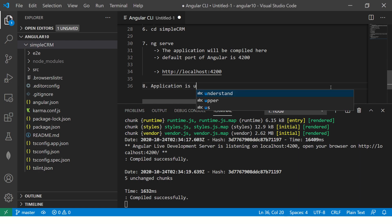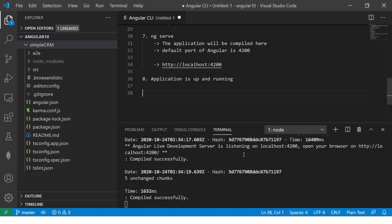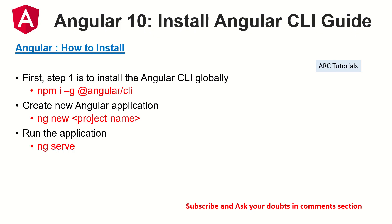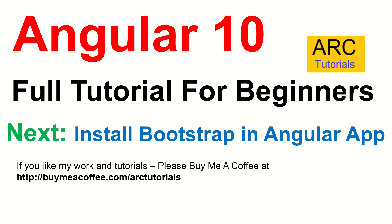When you see the blue screen with your project name and 'app is running', your application is up and running. Congrats — you have successfully started your first application on Angular 10! Mission one complete. In the next episode we'll learn about each folder and file and continue building on this simple CRM application. If you have any doubts drop them in the comments. I'll cover the folder structure in the next episode, and then installation of Bootstrap. Thank you so much for joining — I'll see you in the next episode.